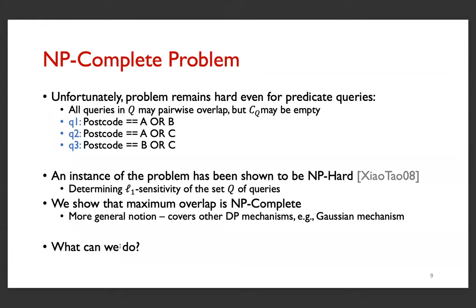Unfortunately, even if we can check pairwise whether queries overlap, the problem remains NP-hard, because even if they pairwise overlap, the joint coverage might be empty. And this is not surprising, an instance of this problem has been shown to be NP-hard, which is defined in terms of finding the L1 sensitivity of a subset of queries. And in our paper, we also show that the more general problem of maximum overlap is NP-complete. We're calling it more general because it covers DP mechanisms which are not defined in terms of L1 sensitivity, for example the Gaussian mechanism.